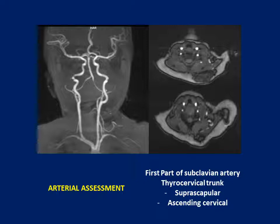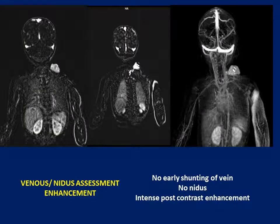A blood vessel is seen arising from the first part of the subclavian artery — this is the vertebral artery. Immediately adjacent to it, two structures are in close communication: the thyrocervical trunk running laterally over the suprascapular region, and the ascending cervical artery running more medially. These are two important branches of the thyrocervical trunk. The other branch is the inferior thyroid artery.